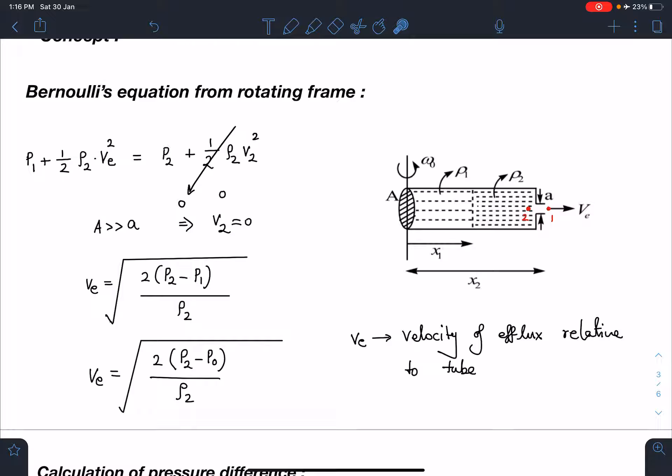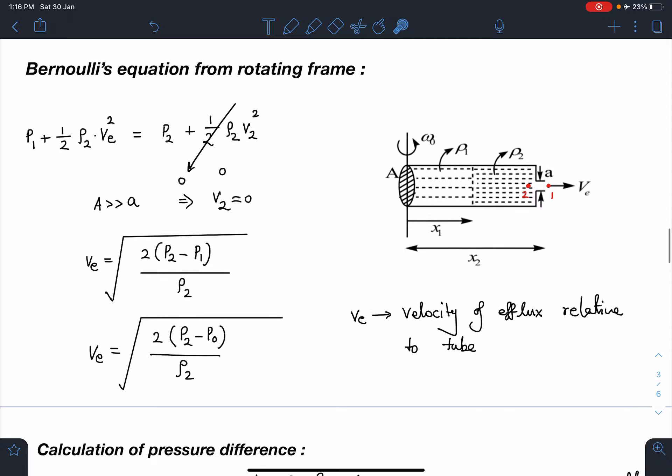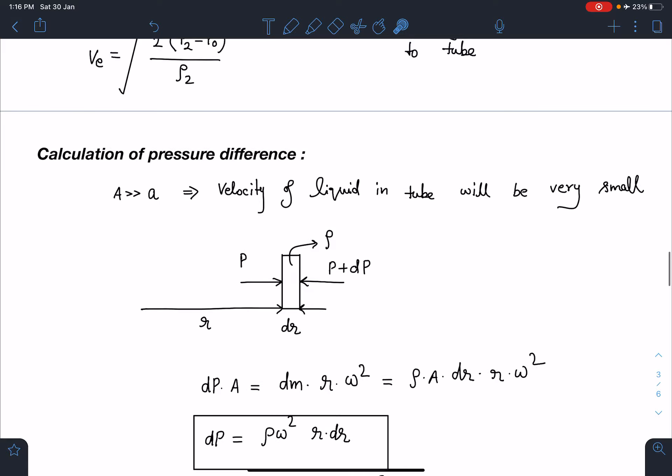Velocity of efflux related to tube this will be the expression of it. Now, what we are going to do is we are going to calculate this pressure difference p2 minus p1 or p2 minus p0 in this particular case. Already we know that pressure difference calculation for that we are taking this assumption that capital A is very very large compared to small a. So, velocity of liquid in the tube will be very small or we can ignore it.